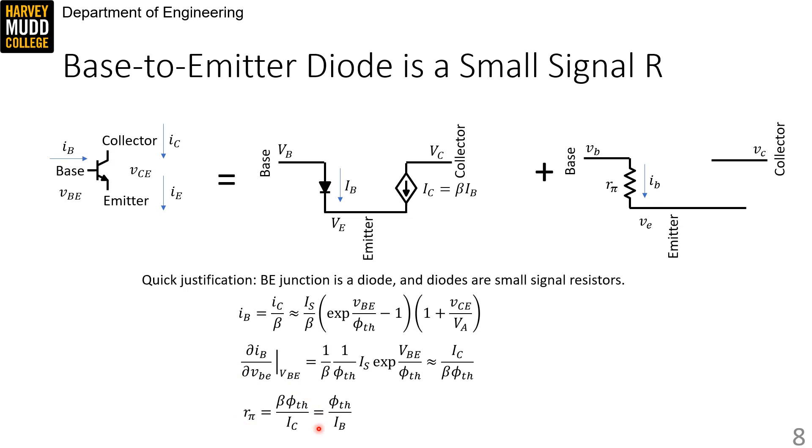But we can also sub in that large signal IC is equal to beta times large signal IB, which shows that phi TH over IB is also an acceptable expression for r pi.